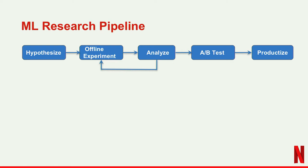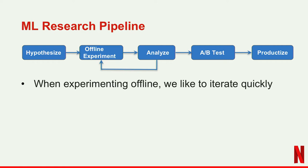Here's a simplified view of how a pipeline looks for a machine learning engineer. You start with a hypothesis, run an offline experiment based on it, gather all the data, model the experiment, then analyze the results. Typically this tends to be an iterative process which goes on for a while. Depending on how the offline metrics look, we go to an A/B test, and if that succeeds, we productize the algorithm.